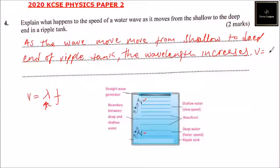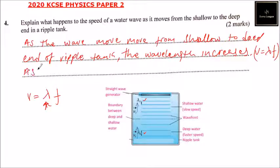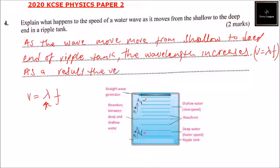So V is equal to wavelength multiplied by the frequency. As a result, the velocity increases, as it is directly proportional to wavelength.